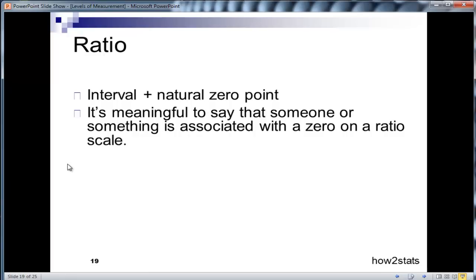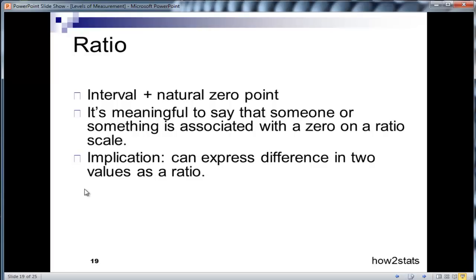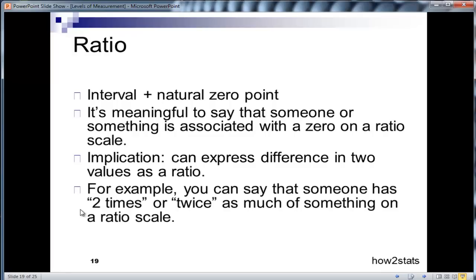It doesn't have to be about people, it can be about objects, it could be about anything. The implication is we can express differences between two values as a ratio, and what that means in practice is that we can say things like someone has two times or twice as much something on a ratio scale more than somebody else.